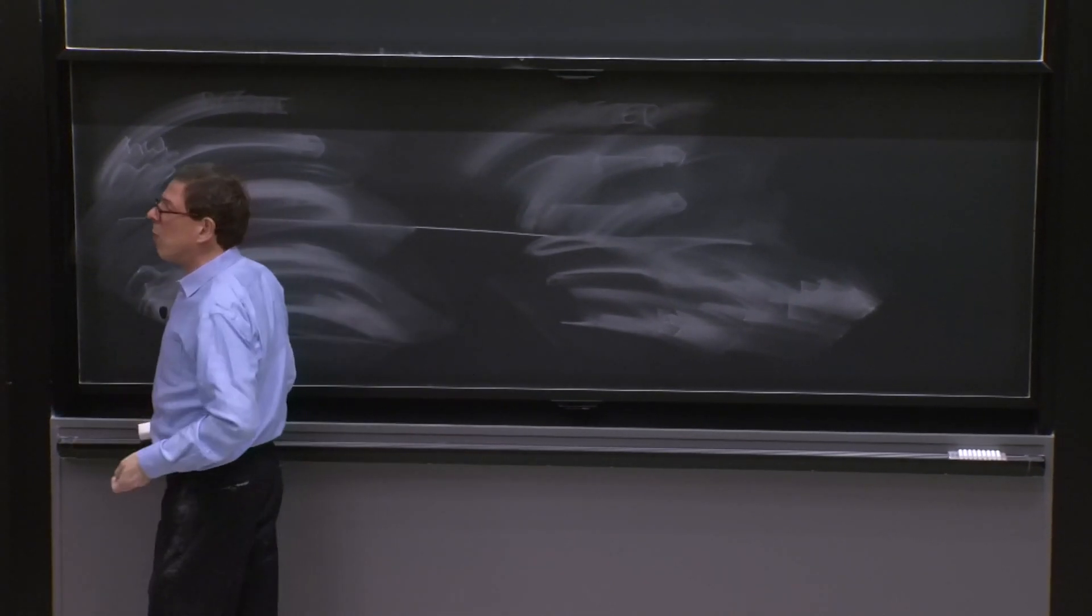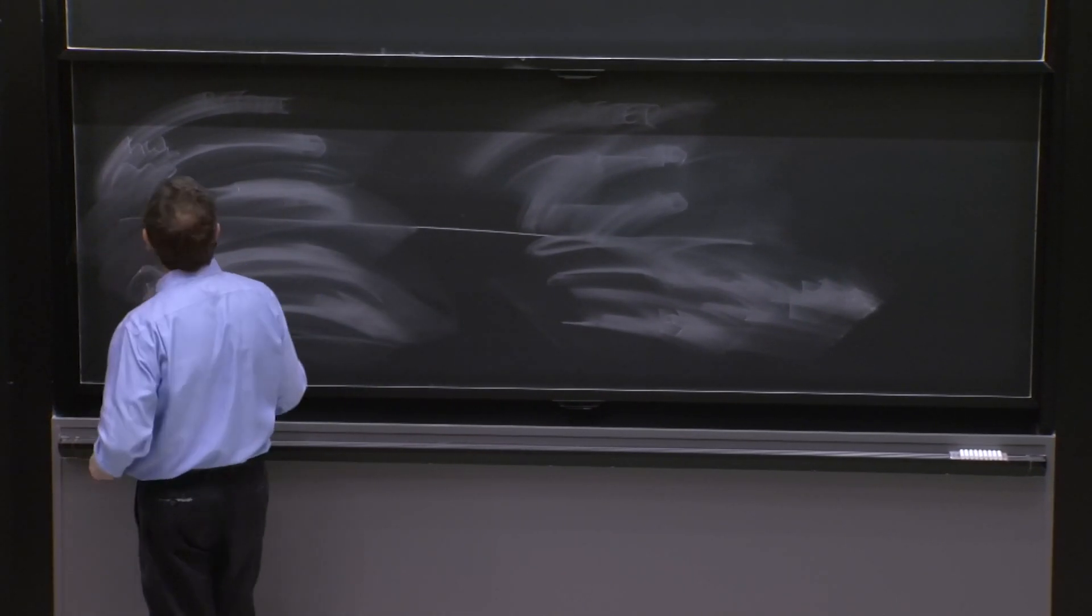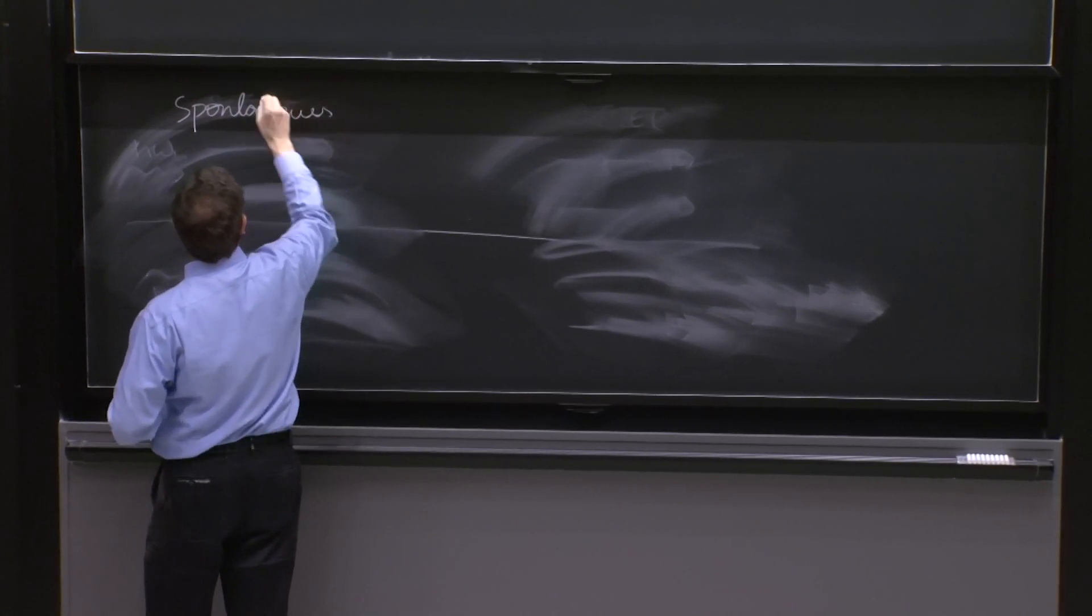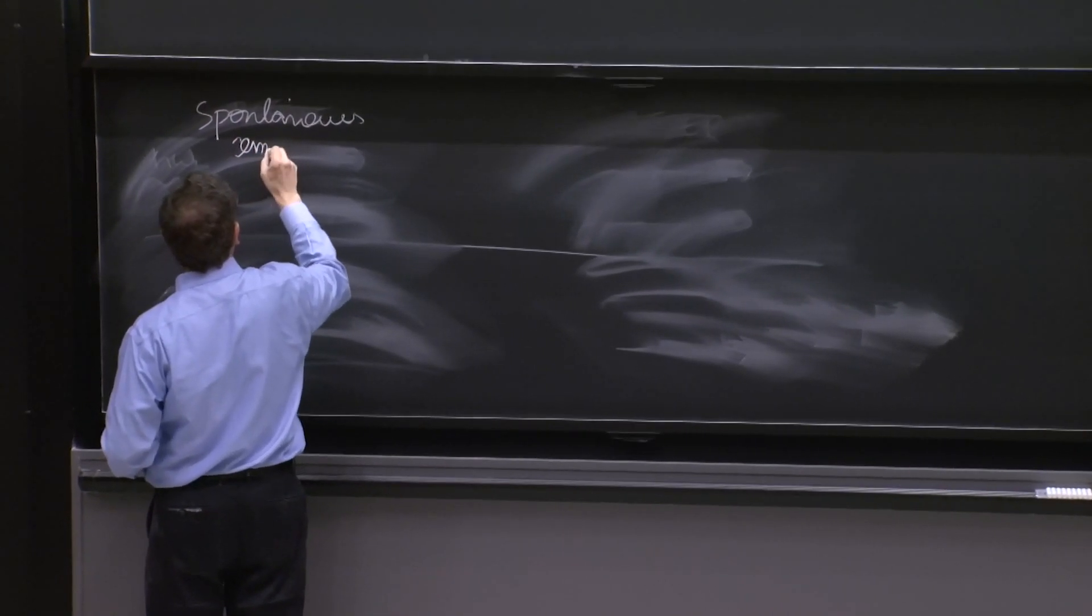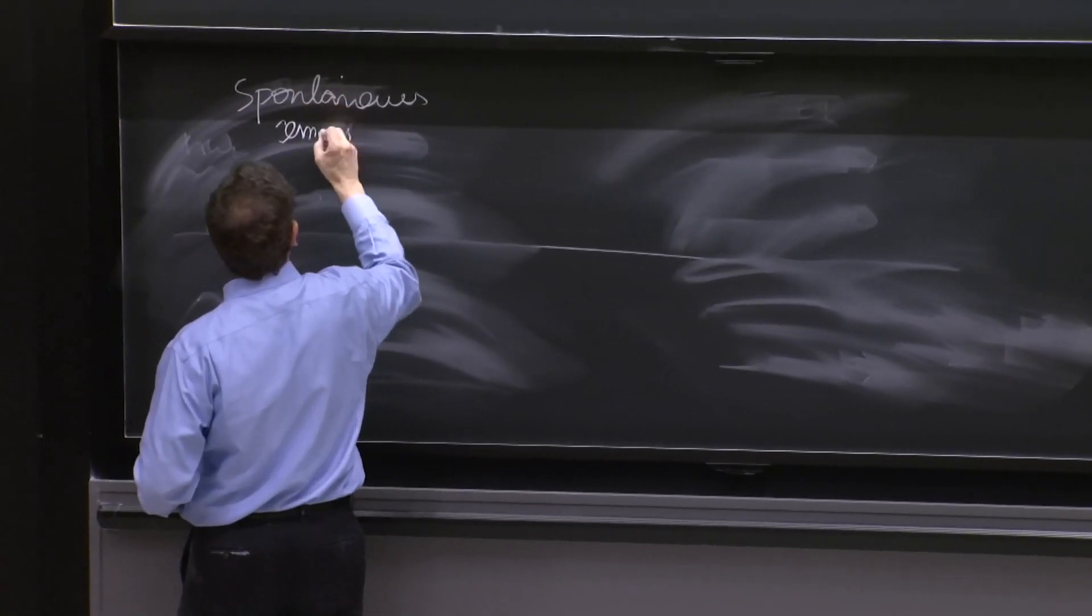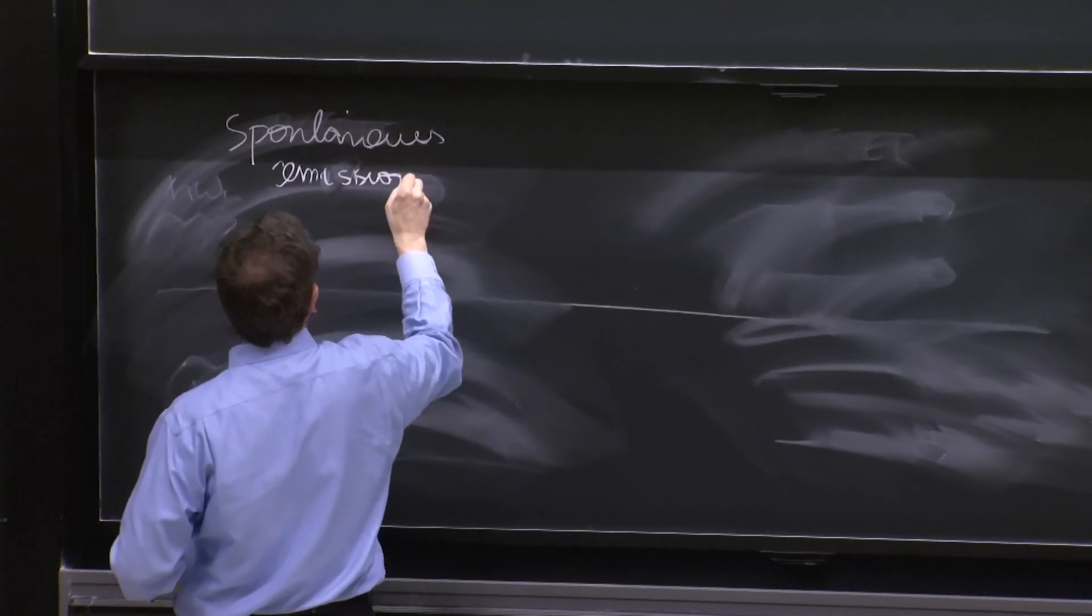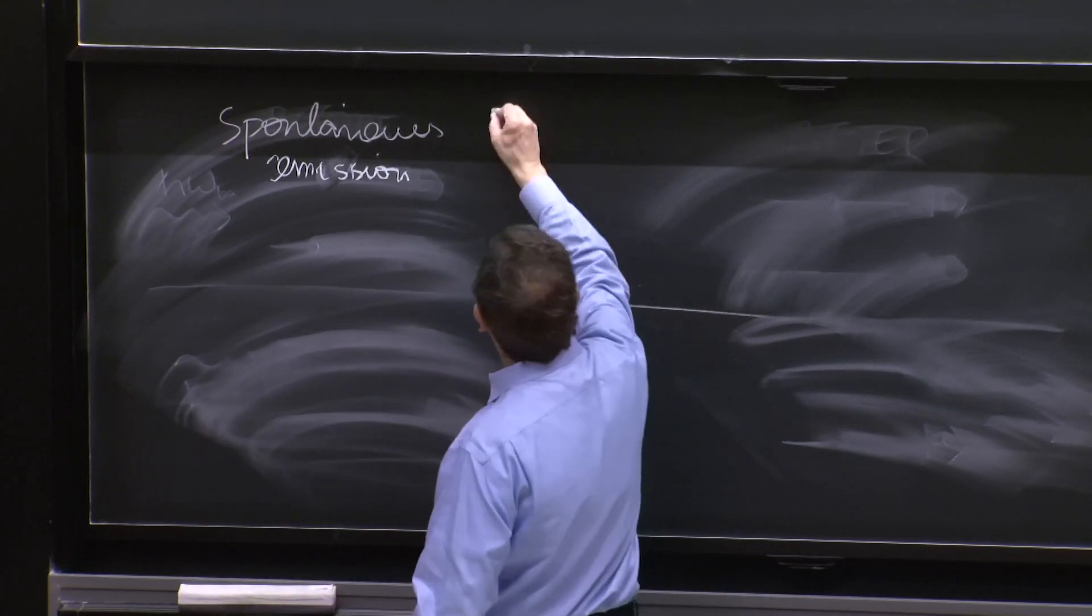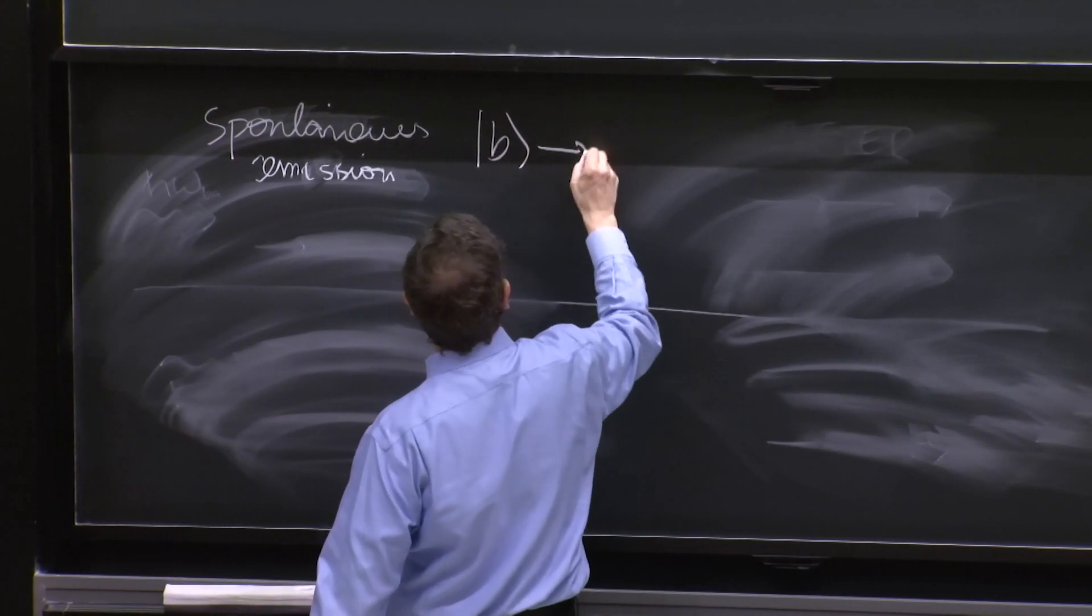So we add one more process. It's called spontaneous emission, and it's a process also from B to A. And it's going to have a rate.